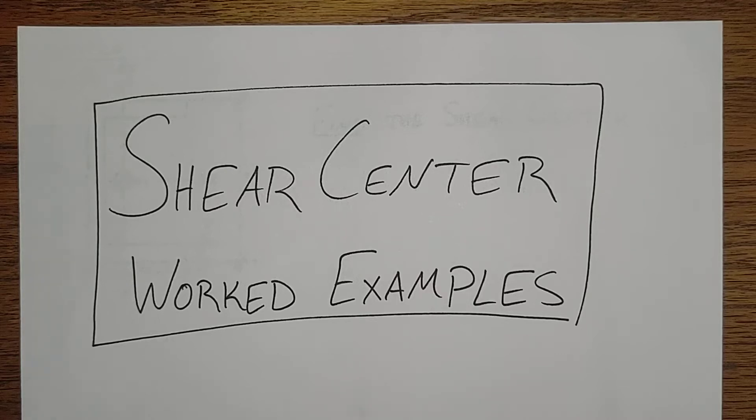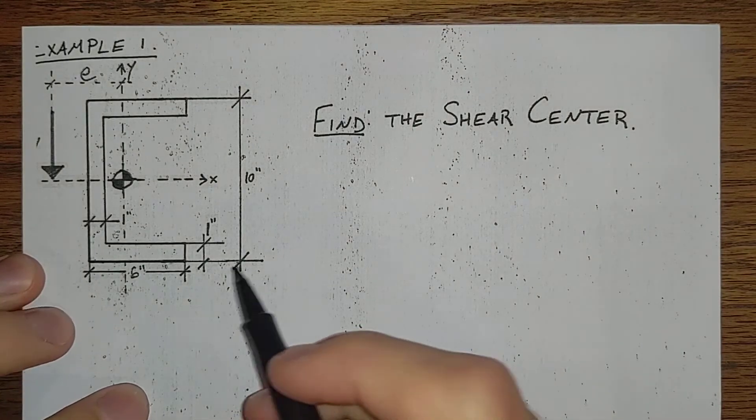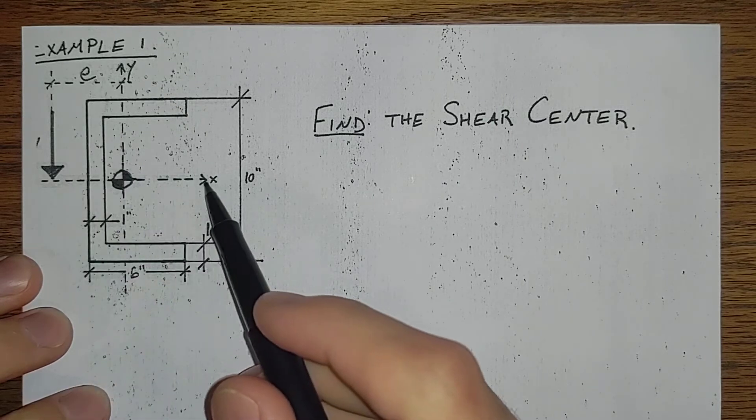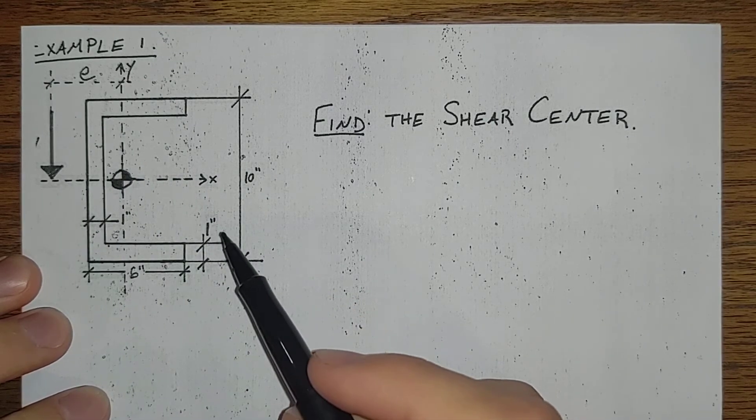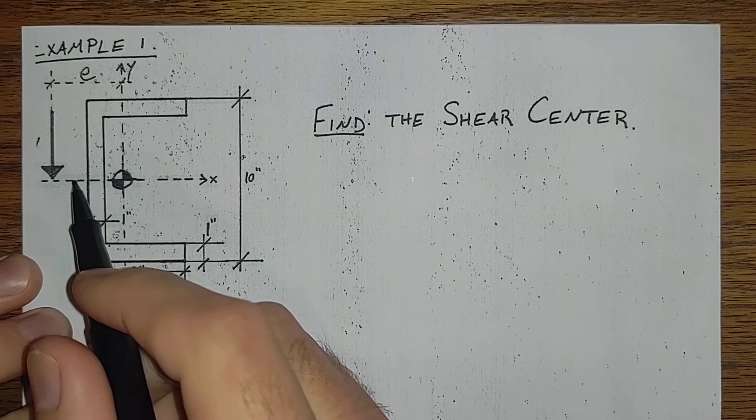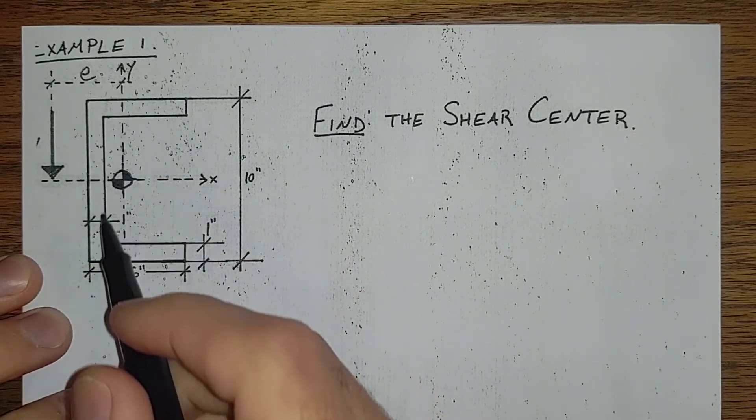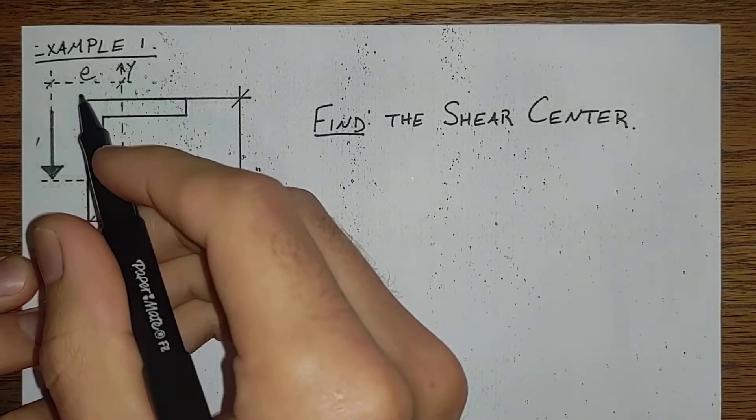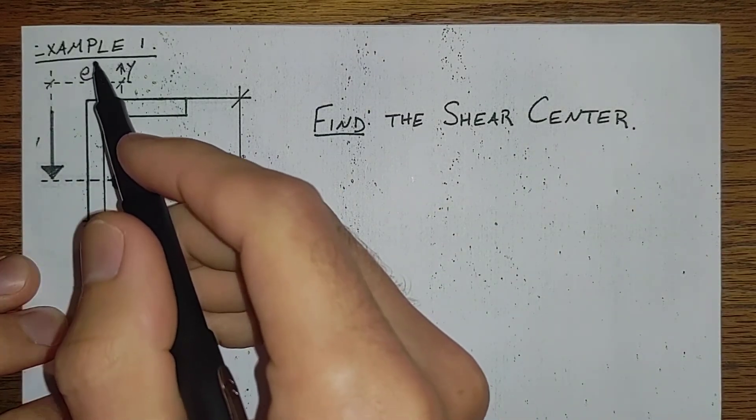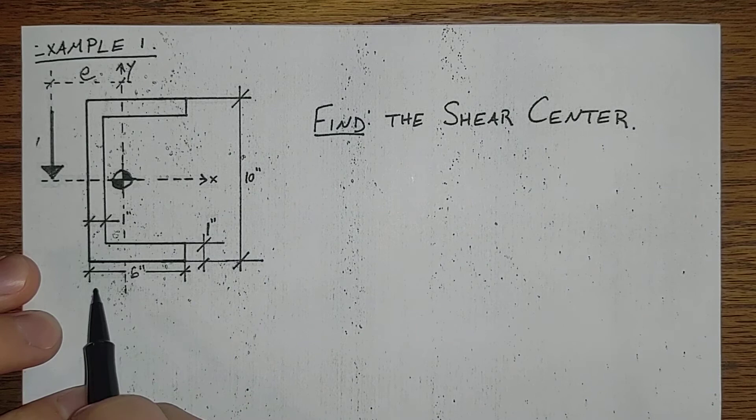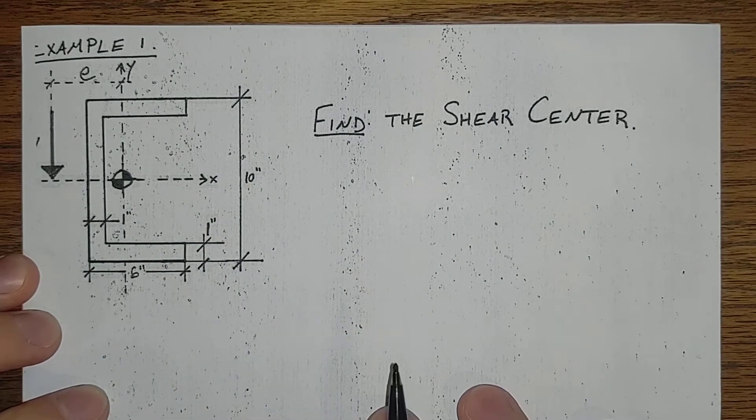Now that we've had that introduction, let's kick into working some examples here. Our first example is a symmetric section with our neutral axis located right in the middle. From symmetry we know that any shear force applied in the x-direction has to be located on that axis of symmetry, so we already know the first coordinate. We're trying to find where the shear center is located, so we're looking for this eccentricity here. We have a C channel that is 6 inches wide, 10 inches tall, and 1 inch thick all the way around.